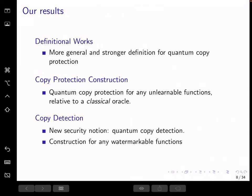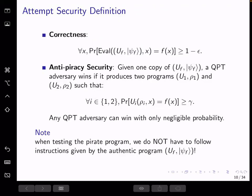Next, we give an attempt security definition and explain its issues. First, we have correctness requirement. Of course, given an honestly generated program, we want evaluation to be correct with probability almost one for all inputs.